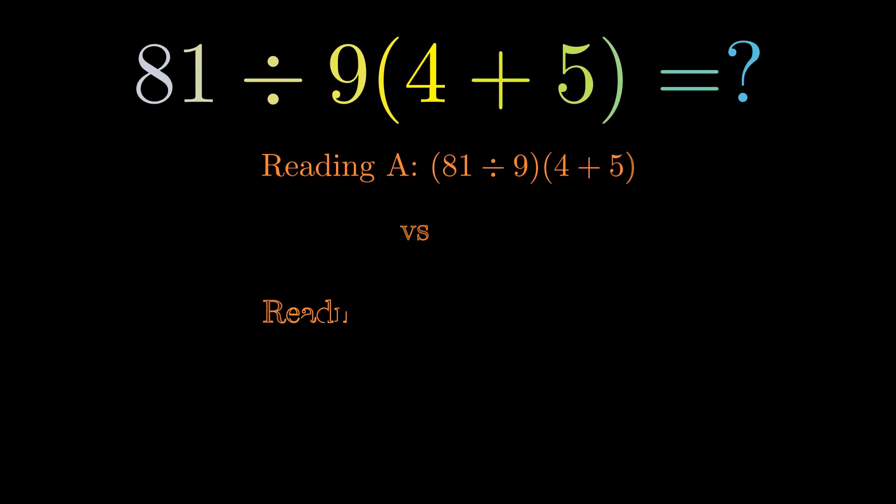This division symbol is ambiguous. Does it separate two operations that we handle left to right? Or does everything following it belong in the denominator? Two valid ways to read it — two completely different outcomes.